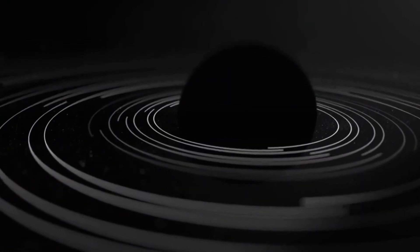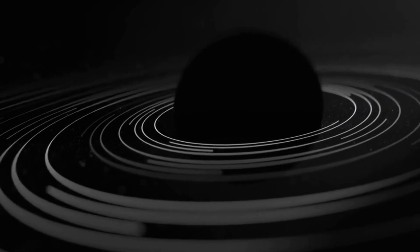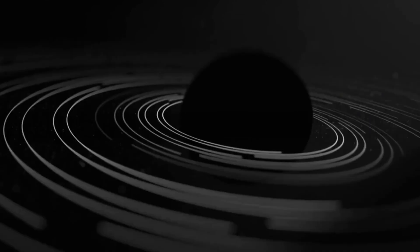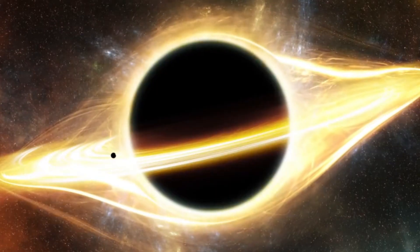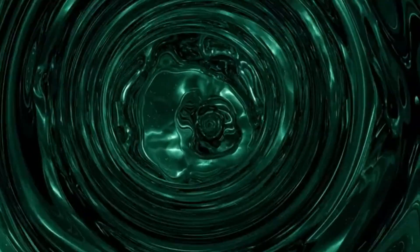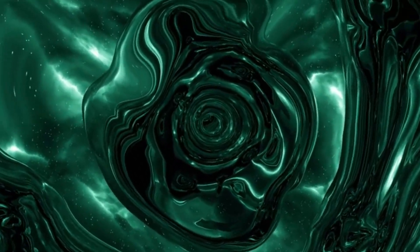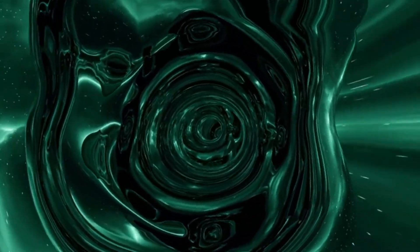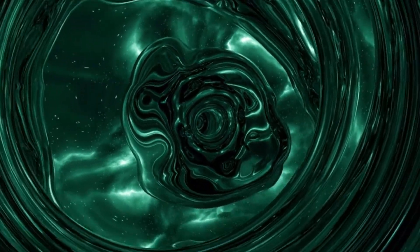Imagine standing on the edge of this event horizon and turning on a flashlight. Normally, light travels at an incredible speed of about 300,000 kilometers per second. But near a black hole, even light isn't fast enough to escape. In fact, inside the event horizon, the speed required to break free would be greater than the speed of light, an impossibility according to our current understanding of physics.